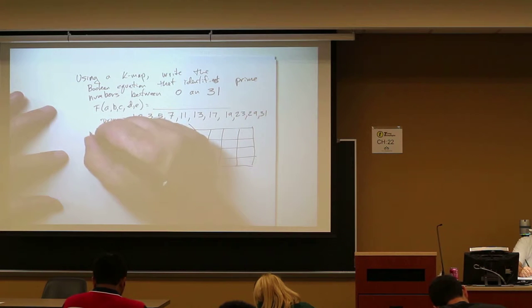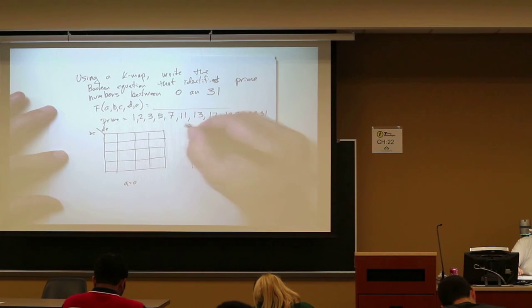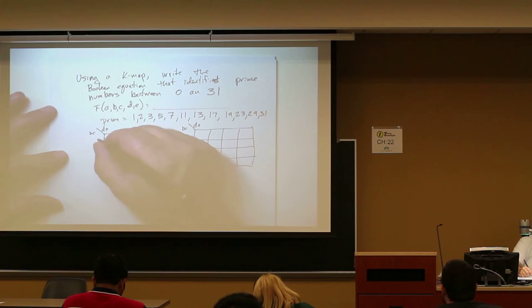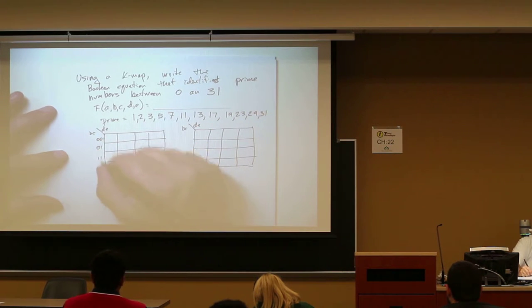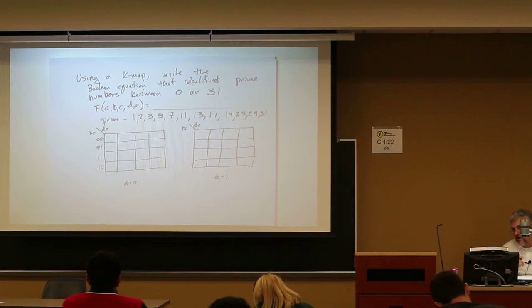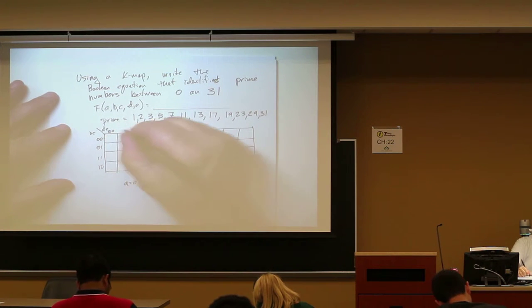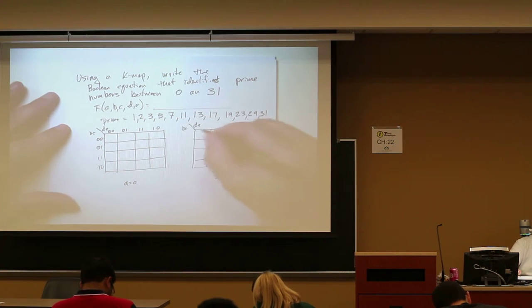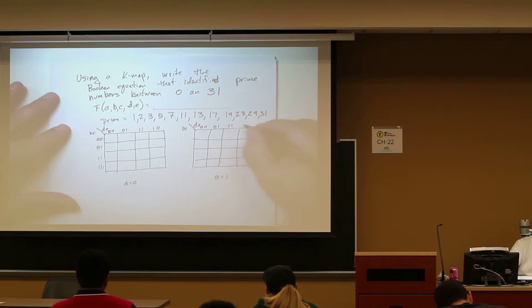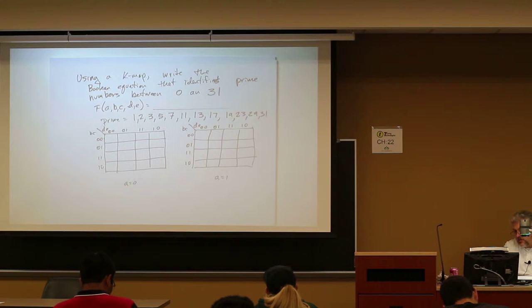Each of these columns will be for B-C, D-E, B-C, D-E. When B-C is 0, 0, 0, 1, 1, 1, 1, 0. Remember, each row here is going to differ by one bit changing. Across the top, 0, 0, 0, 1, 1, 1, 1, 0. And remember, I numbered each one of the cells. That will make this really easy to actually put in our prime numbers.